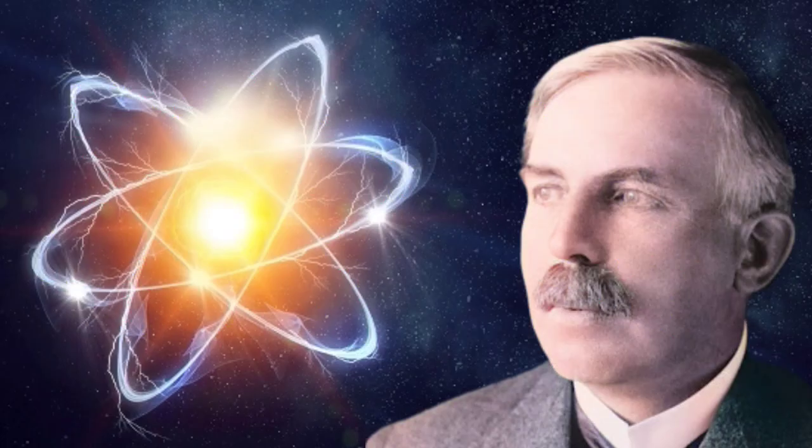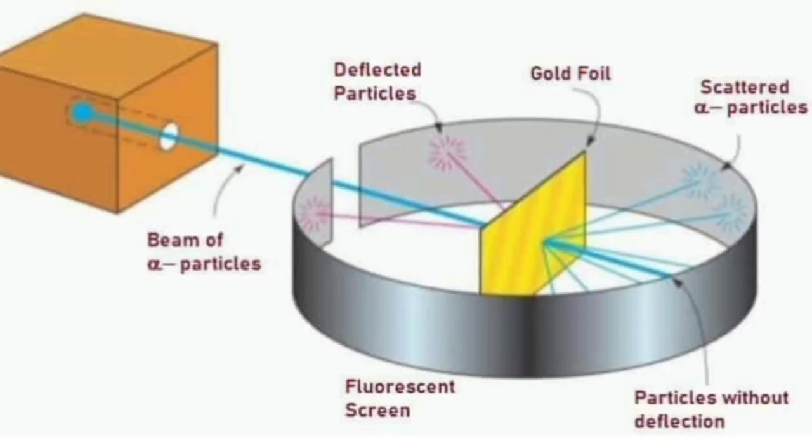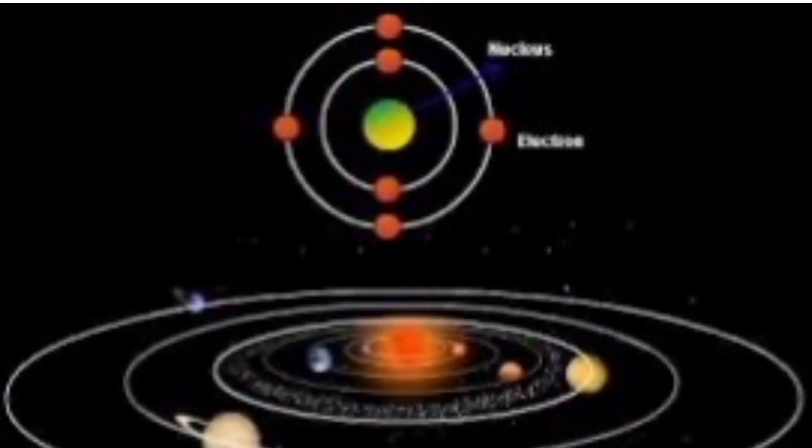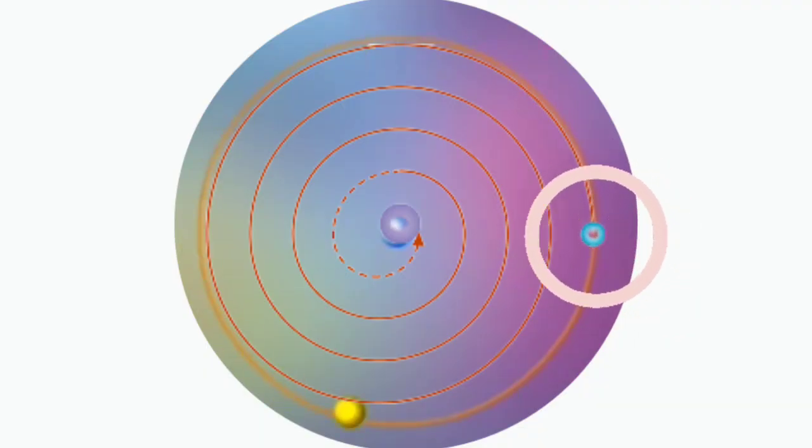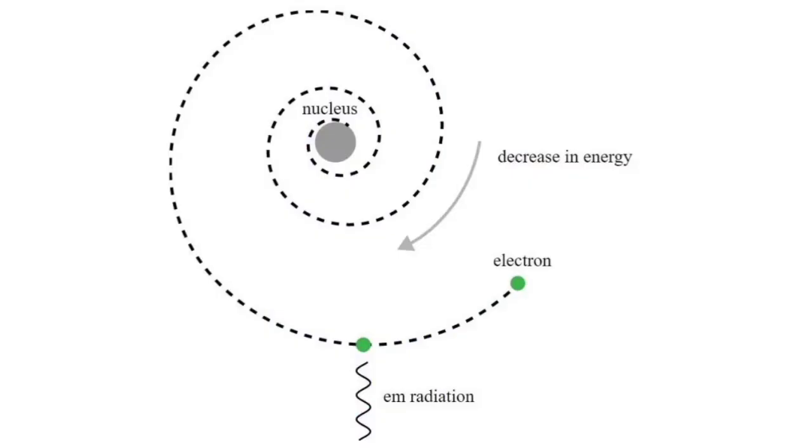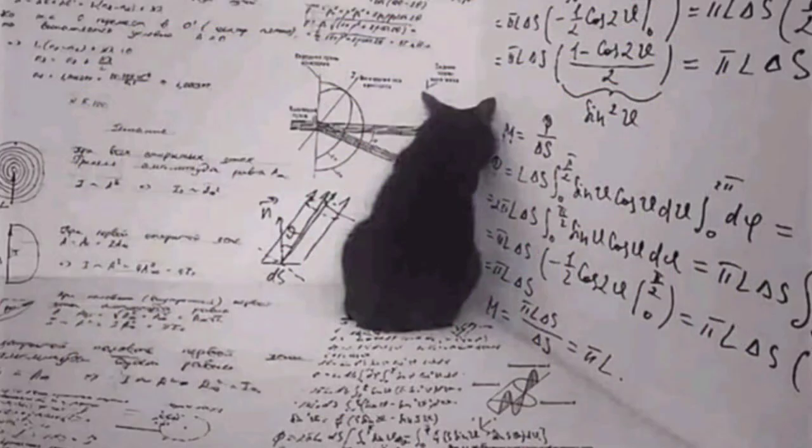To understand why atoms don't implode, we need to take a trip down scientific history lane. Back in 1911, physicist Ernest Rutherford proposed this planetary model of the atom based on his experiments. It seemed logical at the time, but it had some major flaws. The problem is, if electrons were really orbiting like planets, they'd be constantly losing energy and spiraling inward. Classical physics predicted the same thing should happen to electrons, but we know atoms are stable, so something else must be going on.